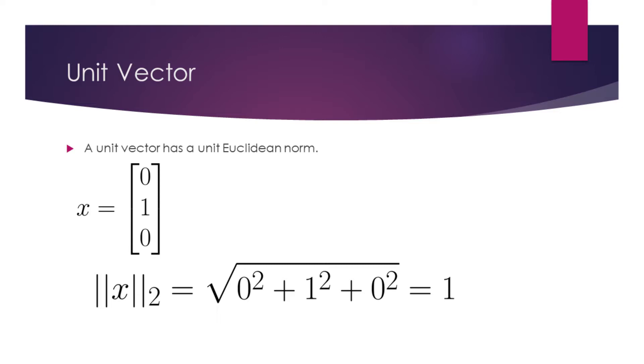A unit vector has a unit Euclidean norm. Consider a vector x. If we find the Euclidean norm of this vector, we will learn that it is equal to 1. This means that the vector x is a unit vector.